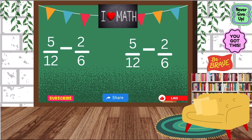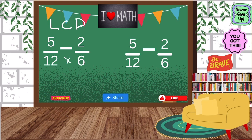So as you guys can see, we have 5 twelfths minus 2 sixths. I have this written on the board twice because I'm going to show you two different ways that you can solve. So first, we have to find the lowest common denominator. We can do this by just multiplying the denominators. 12 times 6 is 72, so we know that our denominators have to be 72.